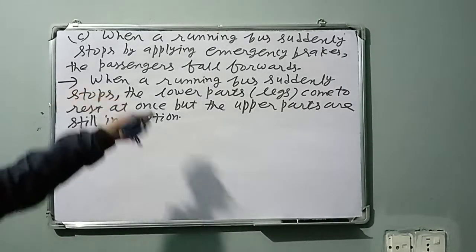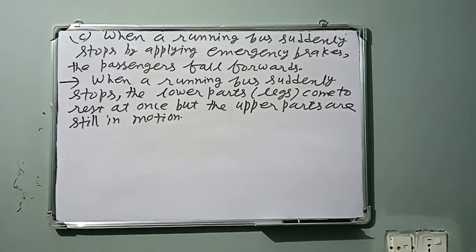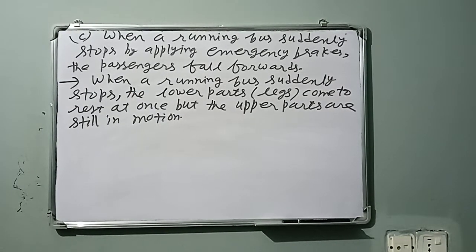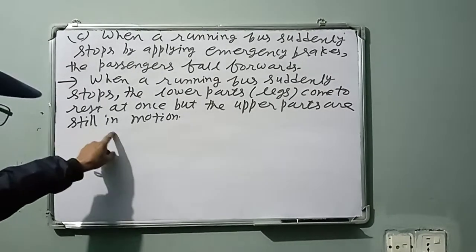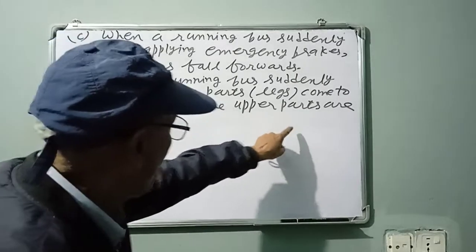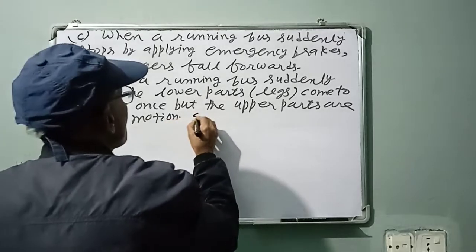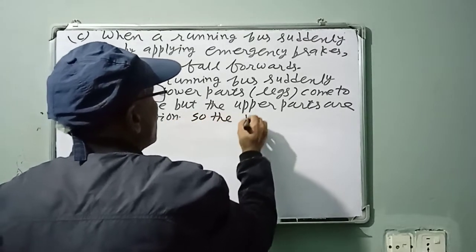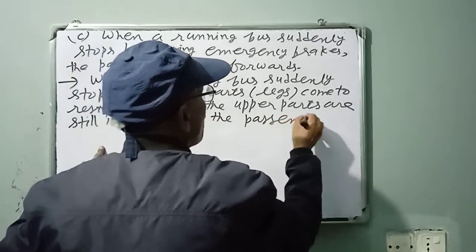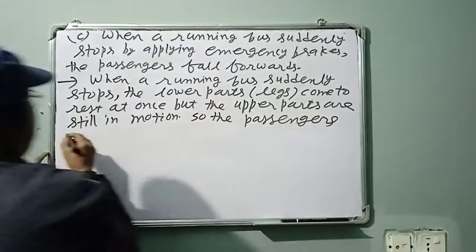When a running bus suddenly stops, the lower parts or legs come to rest at once, but the upper parts or heads are still in motion. So the passengers fall forward.